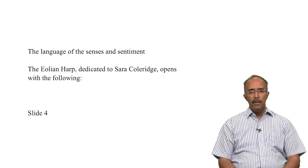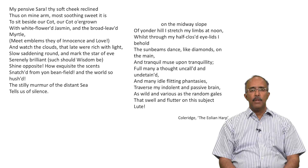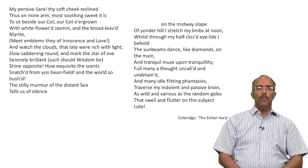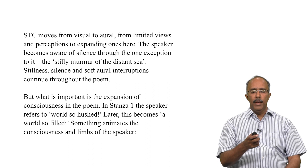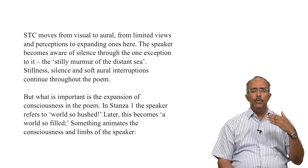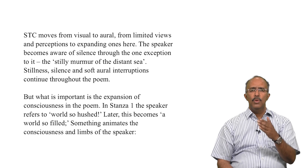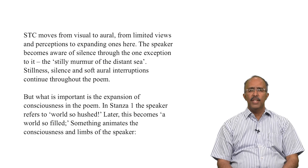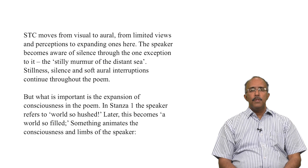The Aeolian Harp, dedicated to Sarah Coleridge, opens with: 'My pensive Sarah, thy soft cheek reclined on my arm, most soothing sweet it is to sit beside our cot, our cot overgrown with white-flowered jasmine.' In the first section of the poem, he is talking about the move from the visual and then moves to the aural, from limited views and perceptions to expanding ones. By the time this section ends, he has moved on to something much vaster — 'Of yonder hill I stretch my limbs at noon,' the sunbeams dance, and he has referred to the distant sea which tells of silence. Coleridge moves from visual to aural, from limited views and perceptions to expanding ones.